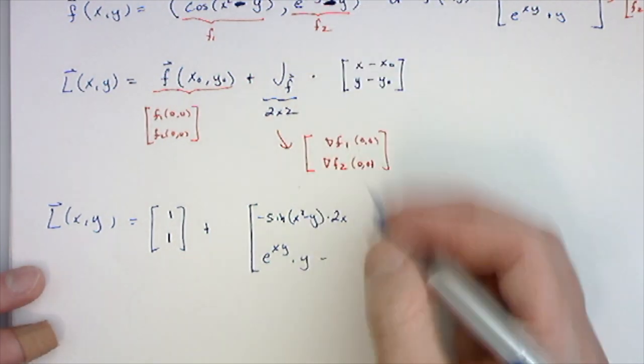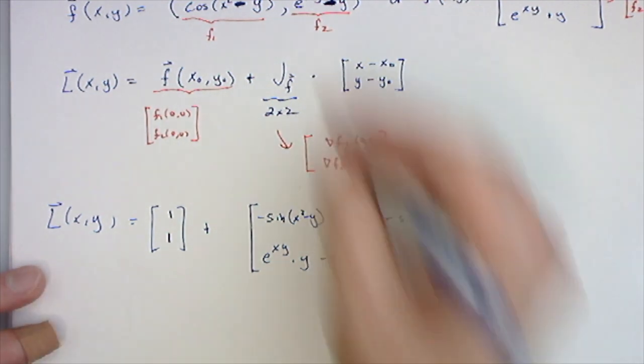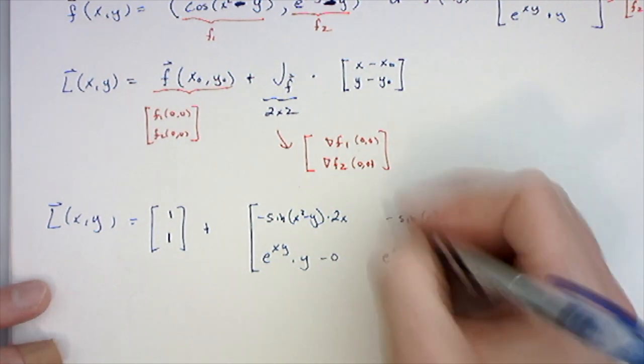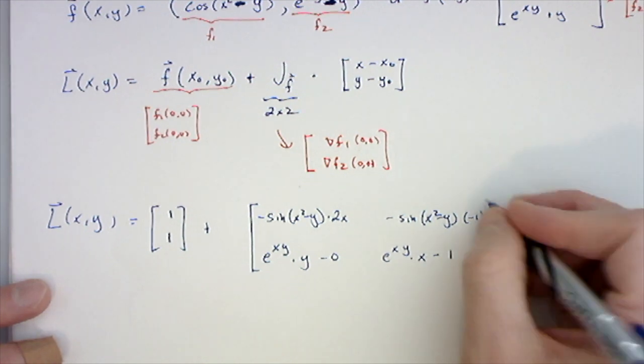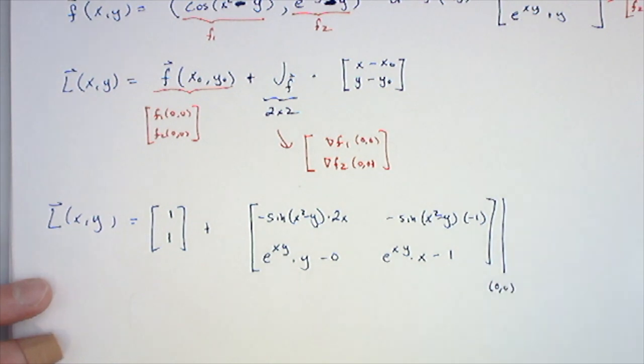This last entry here is the derivative of xy: e^(xy) times the derivative of the stuff, but now with respect to y, so the derivative of this is just x minus the derivative of y is 1. Then we evaluate that all at (0,0), which is going to end up being not very interesting because I picked poorly.